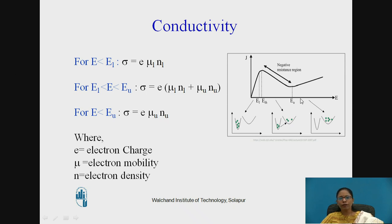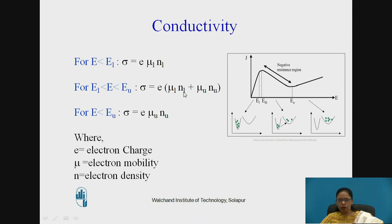Let us talk about conductivity in each region. When E is less than EL, conductivity sigma equals e·μ_L·N_L, where e is the electron charge, μ_L is the lower valley mobility, and N_L is the lower valley electron density. Between EL and EU, sigma equals e·(μ_L·N_L + μ_U·N_U), since electrons are present in both valleys. When E is greater than EU, sigma equals e·μ_U·N_U, as all electrons have transferred to the upper valley.